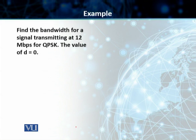So let's take an example. In this particular example, we have a bandwidth for a signal that is transmitting at 12 megabits per second for QPSK, and the value of d is equal to 0. Now, the formula for QPSK, because we know that two bits are carried by one signal element, our r, in this particular case, is 2.